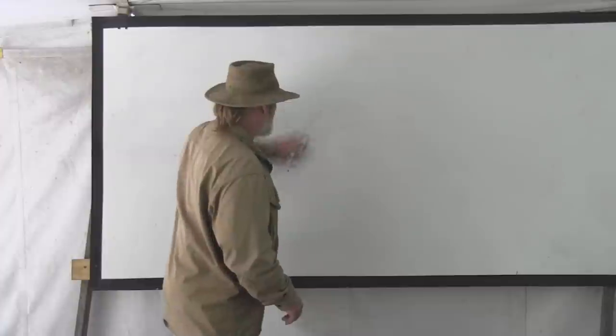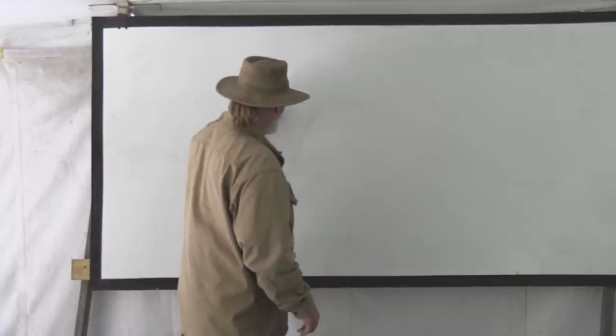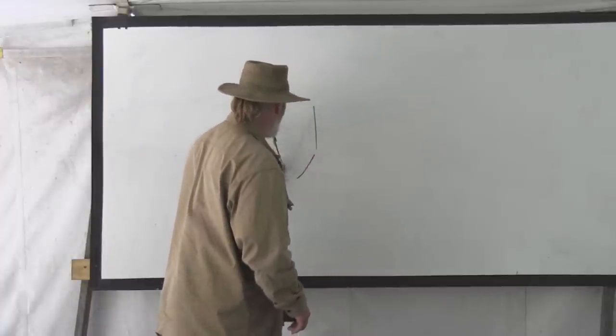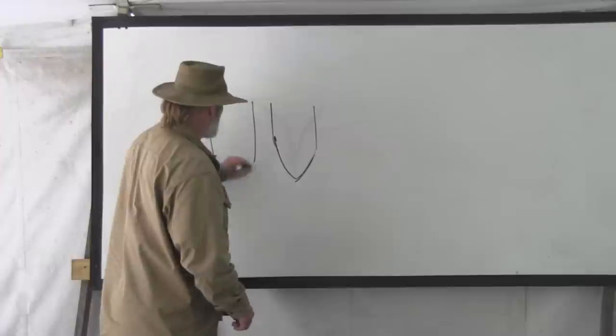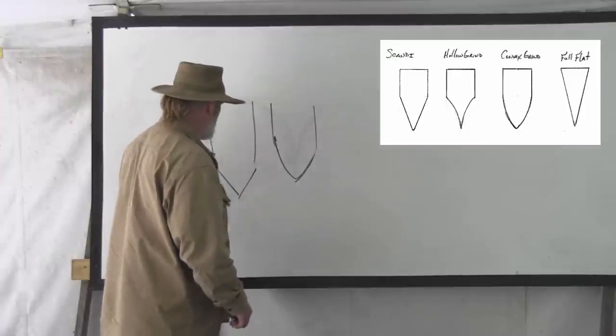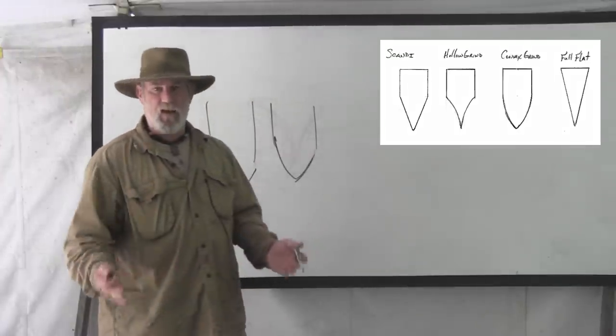So the majority of the knives that you see were a bit of a convex grind like this or they were pretty much what's called a V grind or what's known today as a Scandinavian grind.